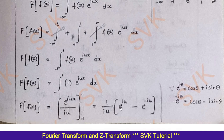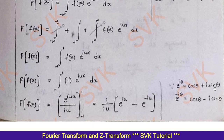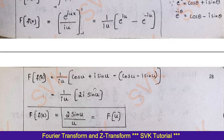We get 1 over iu times (e^(iu) minus e^(-iu)). Recall that e^(iθ) = cos θ + i sin θ, and e^(-iθ) = cos θ - i sin θ. The difference of these two equals 2i sin θ. So we write this as 2i sin(u) divided by iu. Here i and i cancel, leaving 2 sin(u) divided by u. That is F(u).